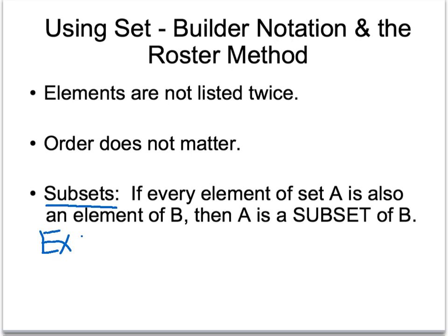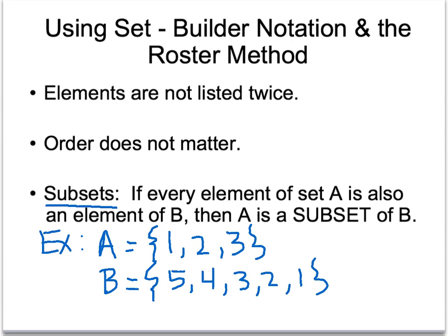So, for example, if I have set A is equal to, I'm going to use the roster method, one, two, and three. Roster method is good when you just have a short, small set. And set B is equal to five, four, three, two, one. I would say that A is a subset of B because everything that's within A, one, two, and three, is also in set B.